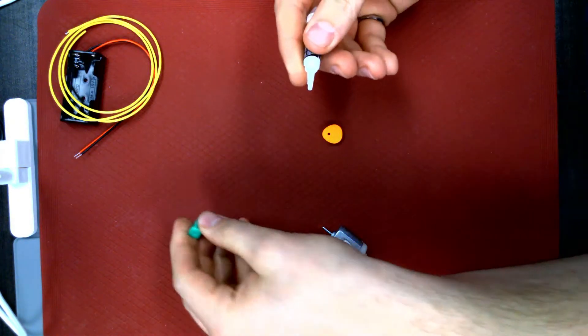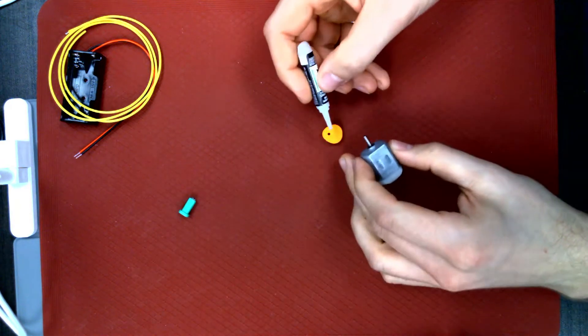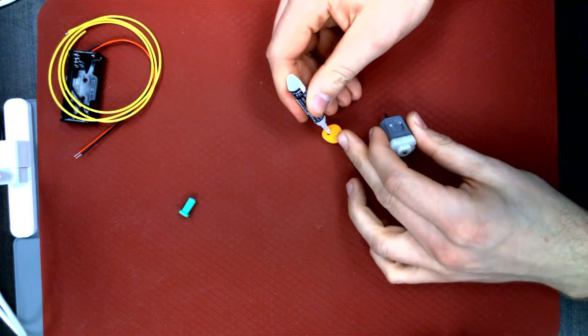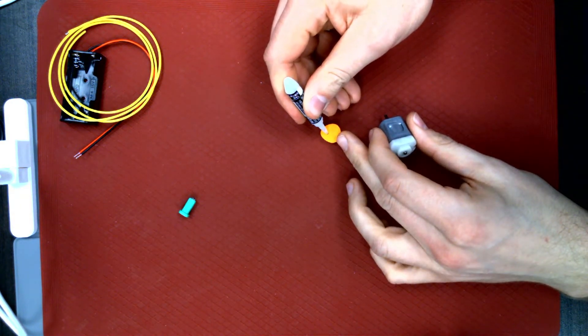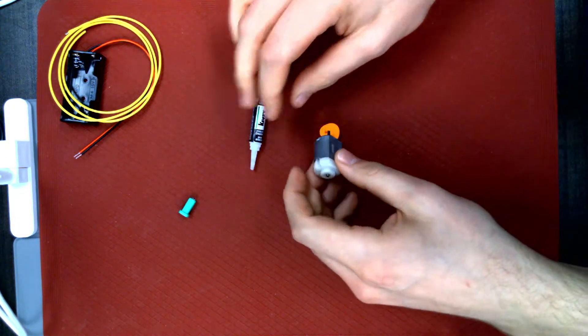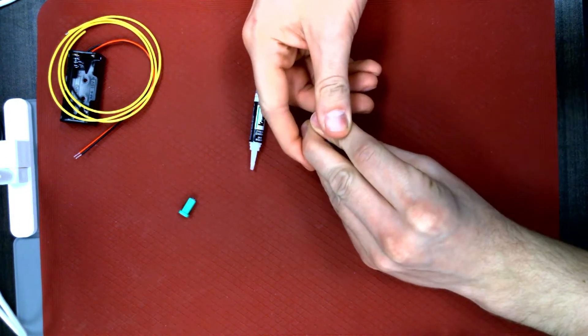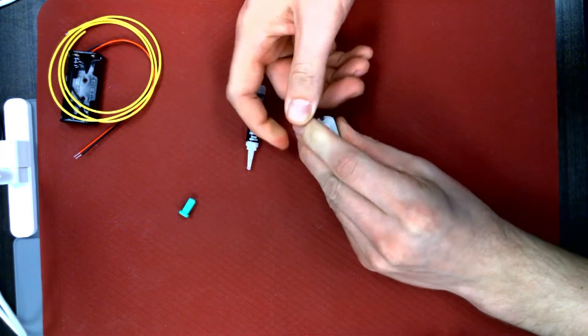For the first step, you'll need the motor, cam, and super glue. Add a drop of glue into the hole in the cam, and then press the motor shaft into place. This will take a decent amount of force, so really lean into it to get the cam on the shaft fully.